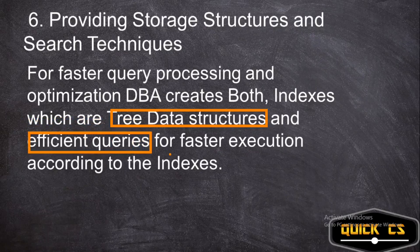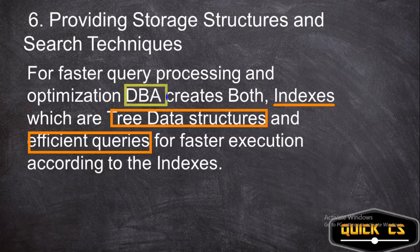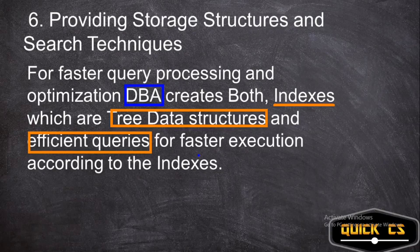These special data structures are called tree data structures, also known as indexes. These efficient queries and data structures are created by the database administrator. Since databases are stored on disk, the DBMS provides special search techniques and data structures to execute queries faster. This means much faster queries and indexes — tree data structures — that are far more efficient than a file system.